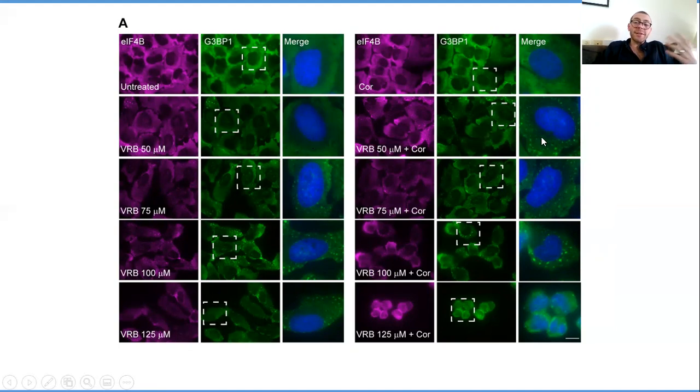When we added our cortisone, we augmented the treatment with the steroid, now all of a sudden we see a huge abundance of stress granules. But even more interesting is that as you increase the concentration of VRB, we see a huge increase in cell death that we didn't see when you don't treat with the cortisone.